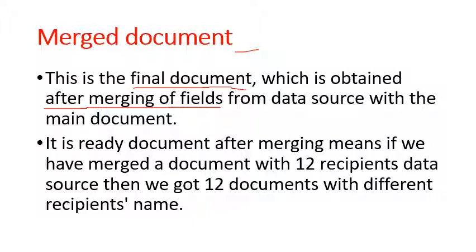The merged document is obtained by merging the data source with the main document. It is the ready document after merging. For example, if we merge a document with 12 recipients' data source, then we get 12 documents with different recipients.